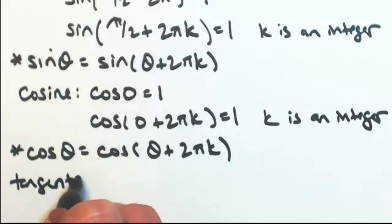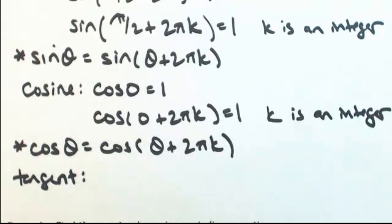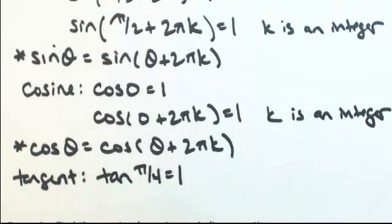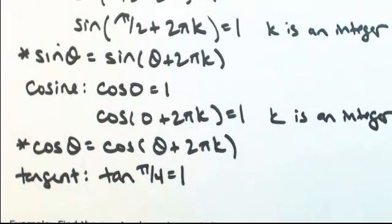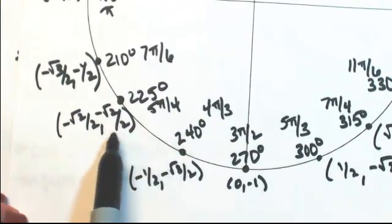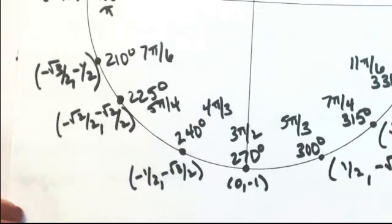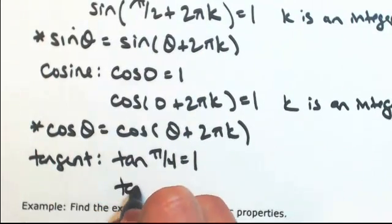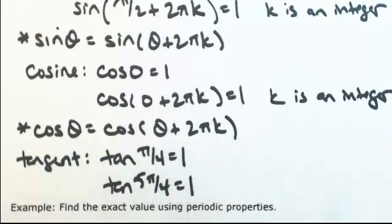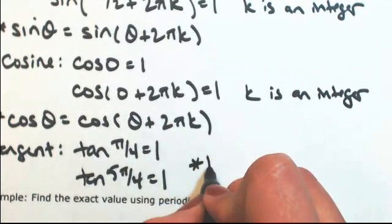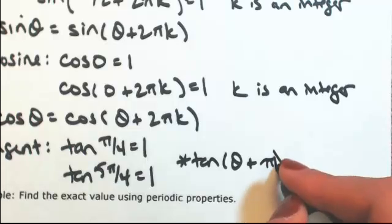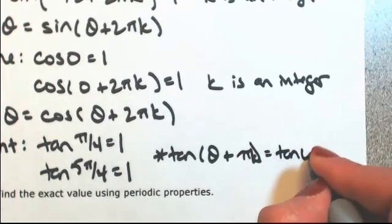Now the tangent function is slightly different. Looking for the spot where I get a 1 — that's going to be in the first quadrant at pi over 4. Now if I go around 2 pi, yes, I'll end up in the same spot. But there's actually another place within one revolution where the x and y coordinates are the same. So at 5 pi over 4, we also get that tangent is 1. So this time I only had to add a pi, not 2 pi. So tangent of theta plus pi equals tangent of theta.